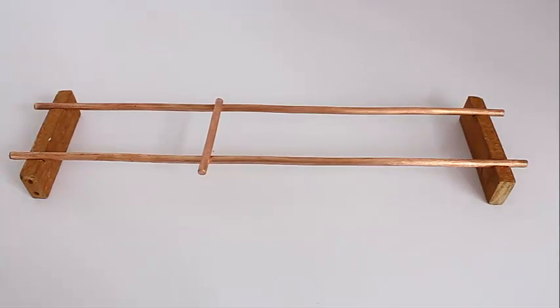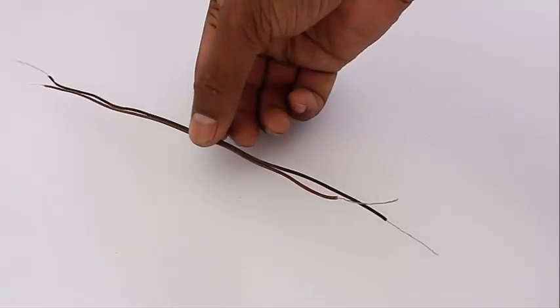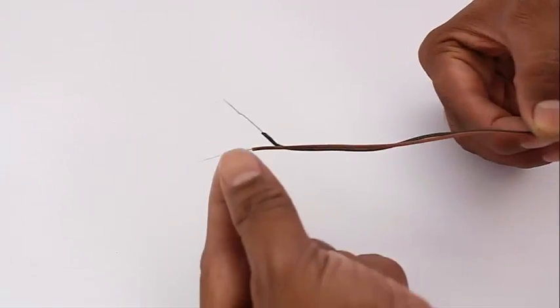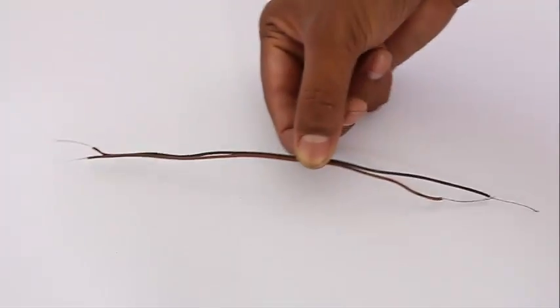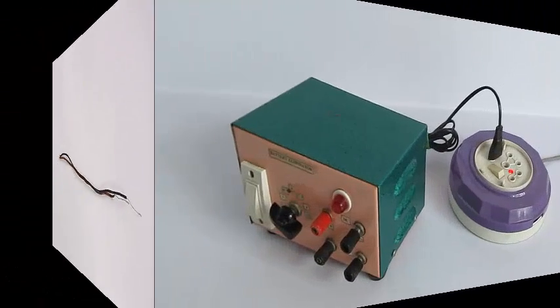Now place these 30 cm copper rods parallel to each other on the wooden holder. Connect the two wires at the ends of the copper rod and then connect them to the battery eliminator.